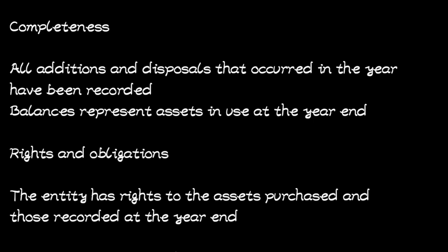The next assertion is rights and obligations. For rights, the objective is to ensure that the entity has rights to the assets that they purchased. If it is recorded that the entity purchased land during the year, the auditor has to confirm that the entity has rights to that land, for example by looking at the land title.